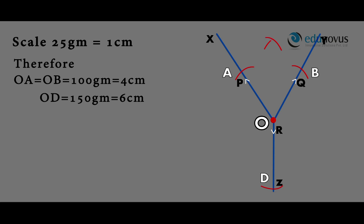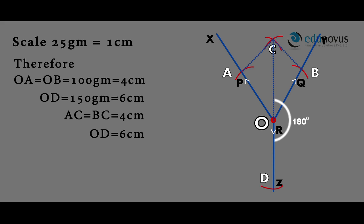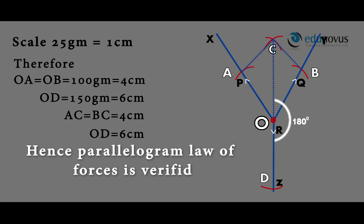Now construct a parallelogram by drawing two more arcs from A and B so that they meet at point C. Here AC is equal to BC, which is 4 centimeters. Join OC and measure its length. Here OC is equal to OD, which is 6 centimeters, and angle COD is equal to 180 degrees. Hence, the parallelogram law of forces is verified.